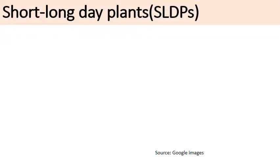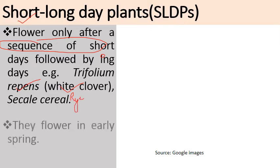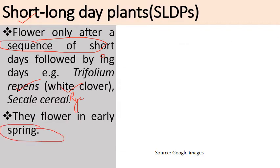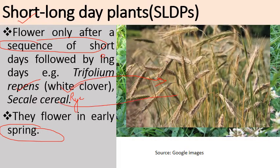Short-long day plants are plants which initially require short day duration followed by long days to bloom. Examples are Trifolium repens, commonly known as white clover, and Secale cereale, commonly known as rye. These plants flower early in spring.